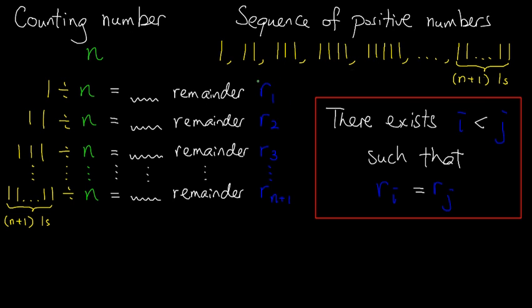We conclude that there are two of these remainders being the same. In other words, there exist two indices, one is called i, one is called j, such that Ri is equal to Rj.